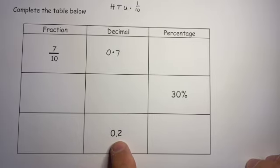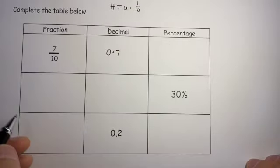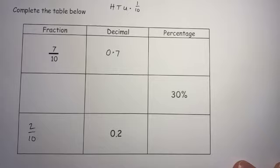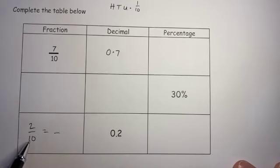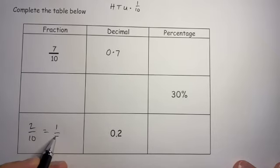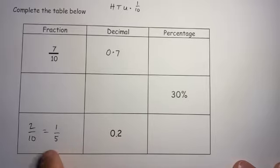0.2 - that two is in the tenths column, so I have got two tenths. However, that can be simplified because they both belong to the two times table. Divide by two: one. Divide by two: five. So 0.2 is the same as one fifth.